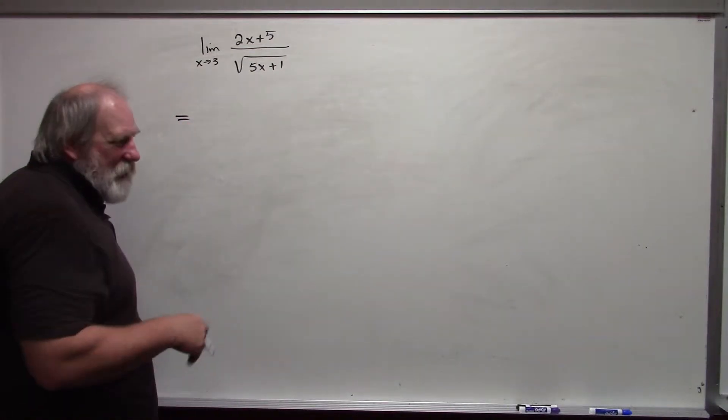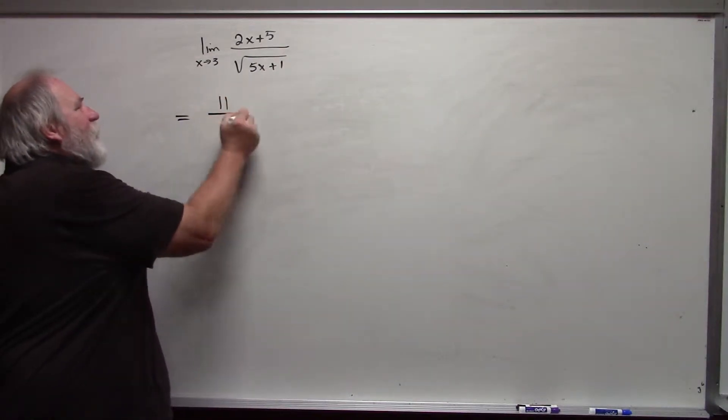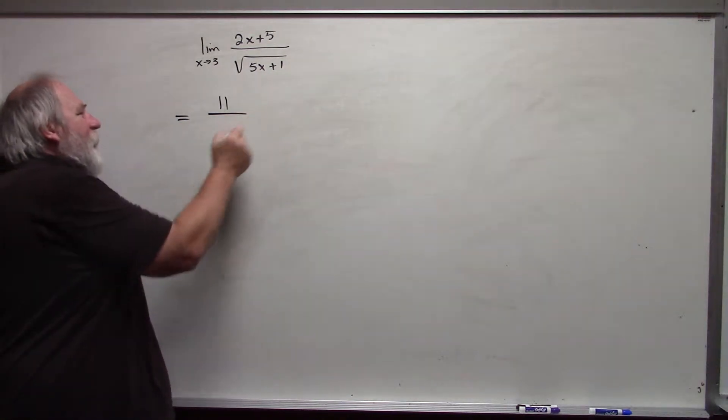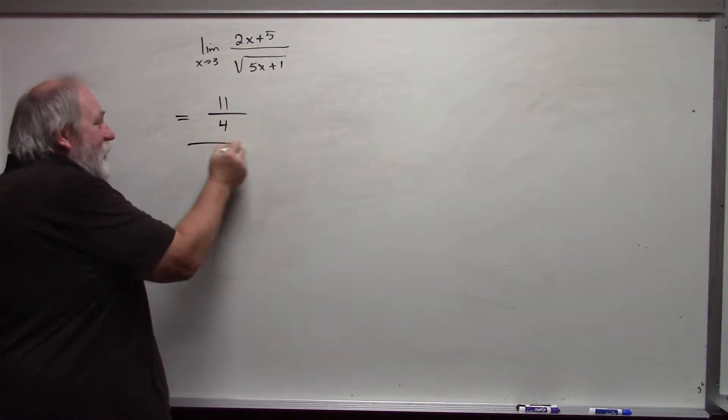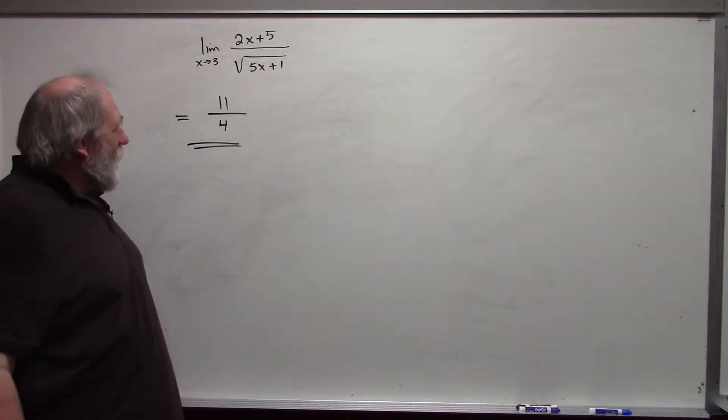As x approaches 3, as x gets close to 3, my numerator is going to approach 11. My denominator is going to approach 4. And this is the result. Nothing bad happens. We evaluate it as it is.